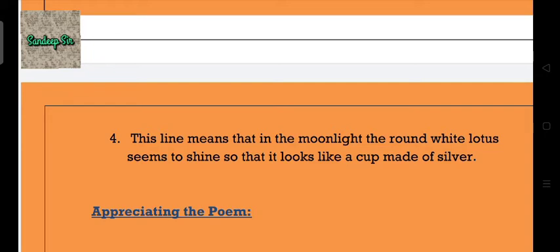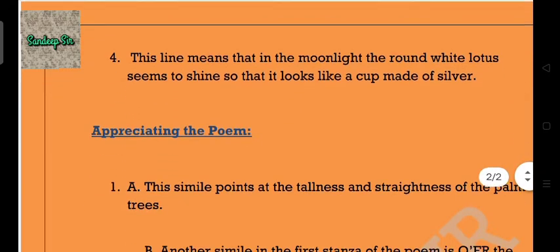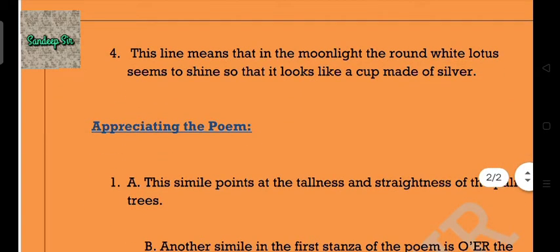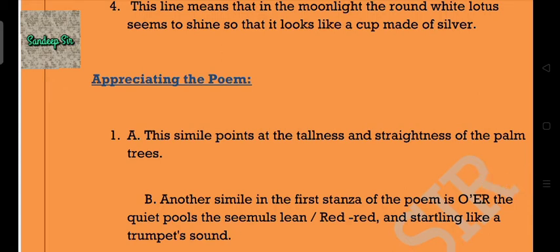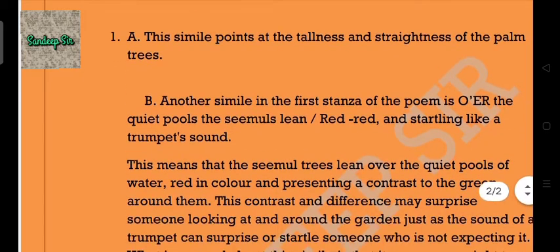Now let's move on to the next exercise, which is 'Appreciating the Poem.' Answer 1a: This simile points at the tallness and straightness of the palm trees. Answer 1b: Another simile in the first stanza of the poem is 'over the quiet pools the simuls lean, red and startling like a trumpet sound.'